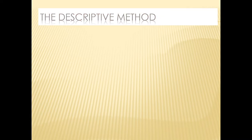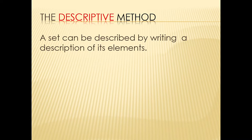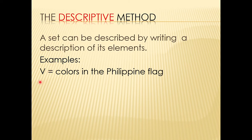For the descriptive method, from the word itself, a set can be described by writing a description of its elements. When we label a set, it should be written in a capital letter. For example, set V is equal to the colors in the Philippine flag — we just describe the members or elements of set V, which are the colors in the Philippine flag.